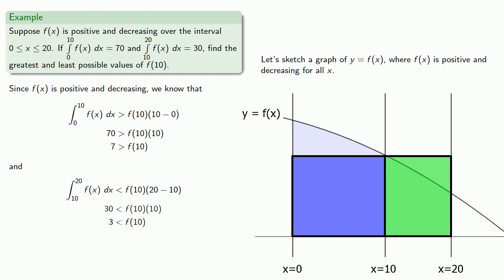And so what we know is that f of 10, whatever it is, has to be someplace between 3 and 7.